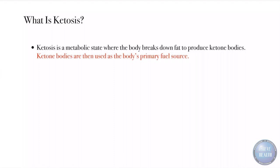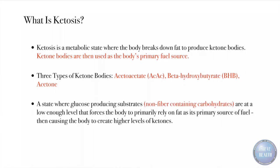There are three types of ketone bodies: acetoacetate, abbreviated as ACAC, beta-hydroxybutyrate which is BHB, and acetone. Ketosis is a state where glucose-producing substrates, which are non-fiber containing carbohydrates, are at a low enough level that forces the body to primarily rely on fat as its primary source of fuel.